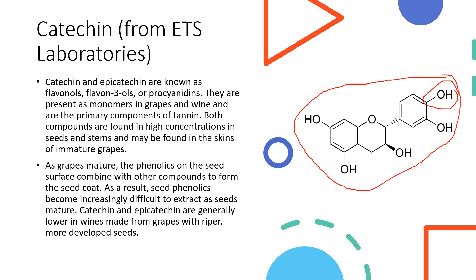Catechin is found in high concentrations in seeds and stems, and if grapes are less mature they may also be found in the skins. There can be a variety difference — catechin tends to be really low in the skins of Syrah but significantly higher in the skins of Pinot Noir, which you've probably experienced on your palate. As grapes mature on the vine, phenolics in the seed combine together to form a seed coat and the seed gets a waxy exterior, making phenolics less extractable. So catechin and epicatechin will be lower in wines made from more mature, later-harvested grapes.